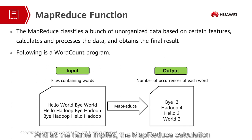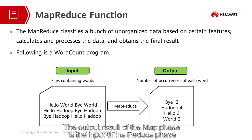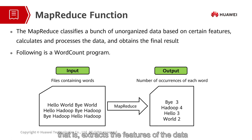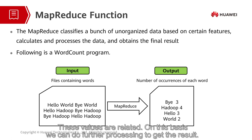As the name implies, the MapReduce calculation process can be divided into two phases: the Map phase and the Reduce phase. The output result of the Map phase is the input of the Reduce phase. The Map phase parses each piece of data and extracts the key and value, that is, extracts the features of the data. Then in the Reduce phase, data is organized by key followed by several values. These values are related, and on this basis we can do further processing to get the result.